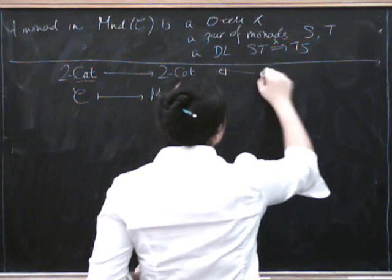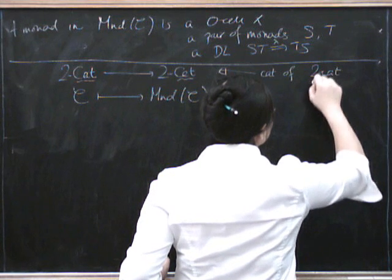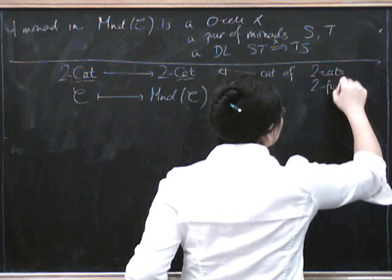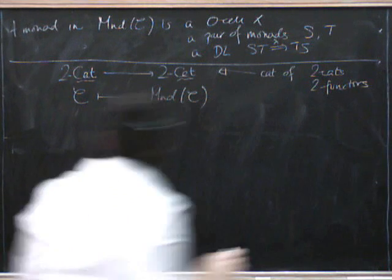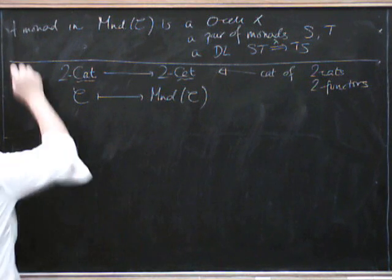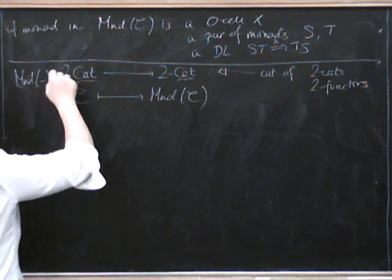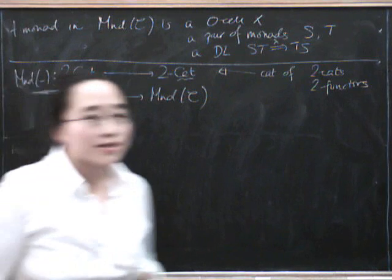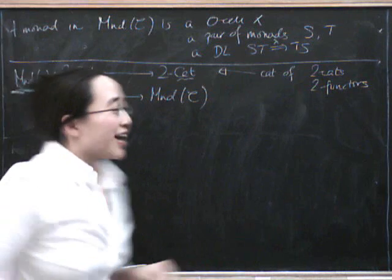And in fact, we can call this monad blank, because it takes C and it takes it to monads in C. And Street shows that this is, in fact, a monad. It's the monad monad. Monad is a monad.